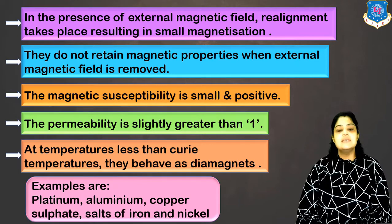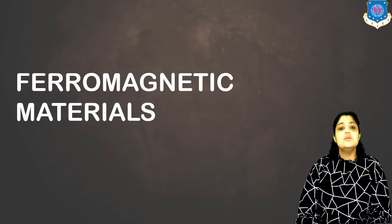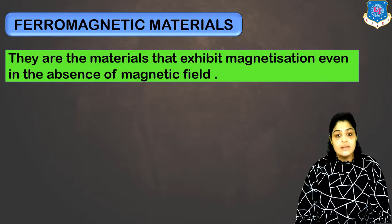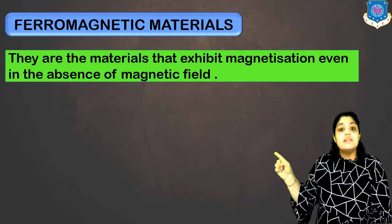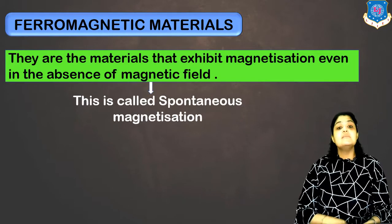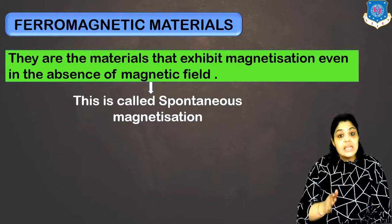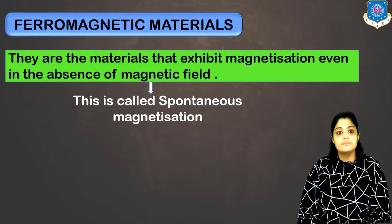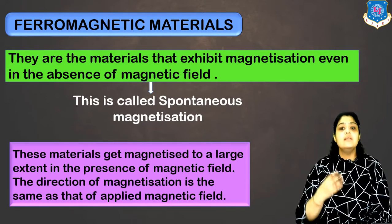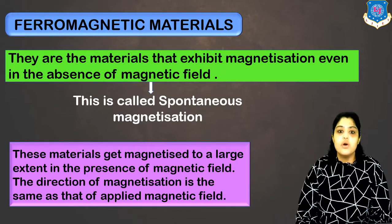Now let's discuss the third category — ferromagnetic materials. Ferromagnetic materials are materials which exhibit magnetization even in the absence of magnetic field, and this property is known as spontaneous magnetization. These materials get magnetized to a very large extent when the magnetic field is applied, and the magnetization also takes place in the direction of the magnetic field.